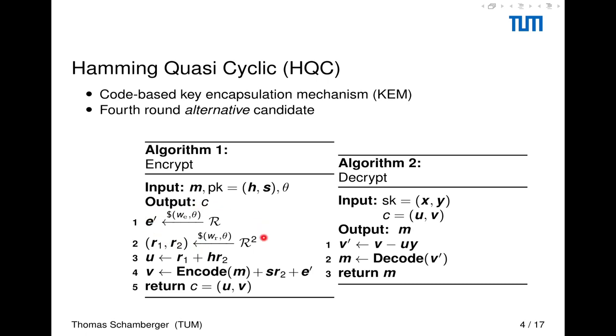For our encryption, we first sample some polynomials of small Hamming weight and compute the first part of ciphertext U and then we encode our message with our code combination, add some error onto it, and this is now our ciphertext. During the decryption, we use our ciphertext, multiply U with our Y, subtract it from V, put it into the decoder, and then we, after decoding, get our message back. This works as, with the knowledge of Y, we reduce the amount of errors in V, such that the decoder again can decode. If you don't know Y, the error is too high and decoding fails.